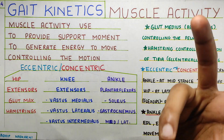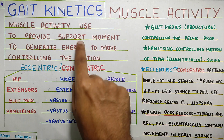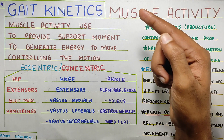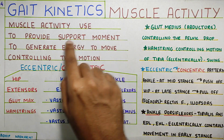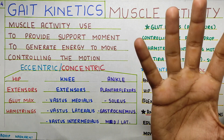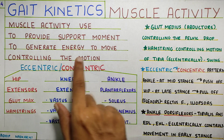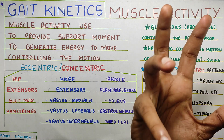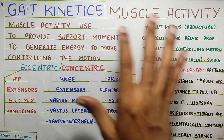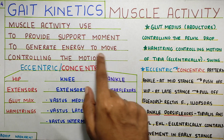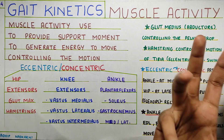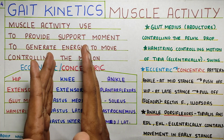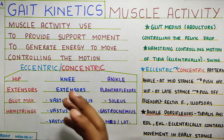First, muscle activity — what is the use of it? To provide support and movement as we have spoken before. To generate energy to move, that is basically concentric activity, to push forward. Support movement is to absorb the forces — that is eccentric activity — and also controlling the motion, like placing your foot down in a controlled manner, which is again eccentric activity. So we are going to look at muscle activity as eccentric and concentric types, divided by joints: hip joint, knee joint, and ankle joint.